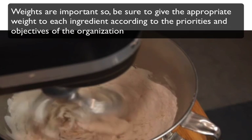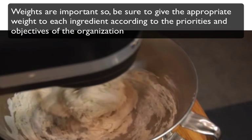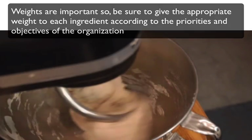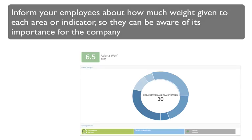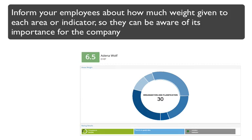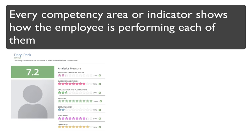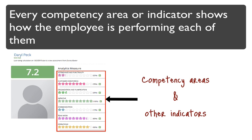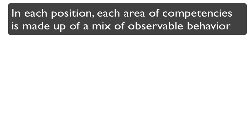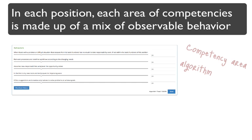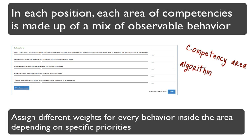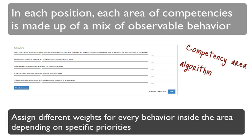Weights are important, so be sure to give the appropriate weight to each ingredient according to the priorities and objectives of the organization. Inform your employees about how much weight is given to each area or indicator so they can be aware of its importance for the company. Every competency area or indicator shows how the employee is performing in each of them. In each position, each area of competencies is made up of a mix of observable behaviors. Assign different weights for every behavior inside the area depending on specific priorities.